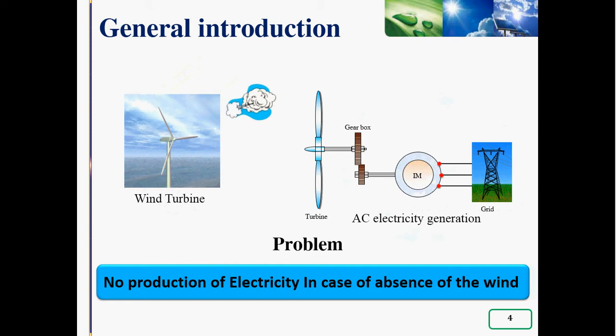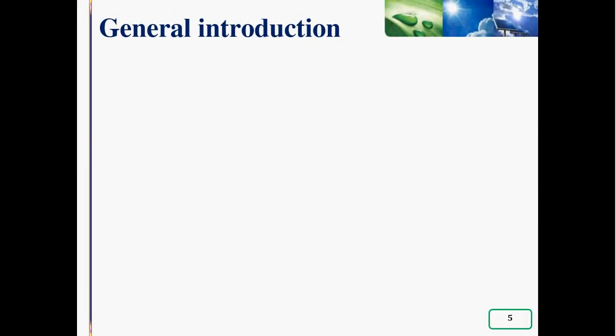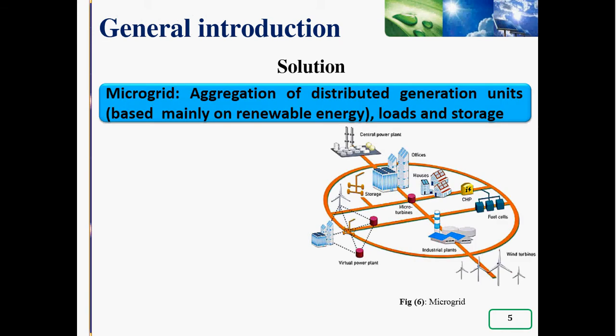What is the solution then? Since renewable energy are intermittent in nature, an aggregation of distributed units based mainly on renewable energy such as wind, photovoltaics, solar CSP, loads, and storage systems are proposed as a solution and known as microgrid.